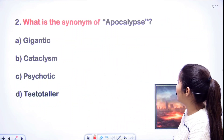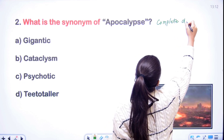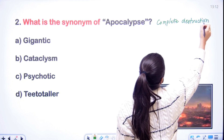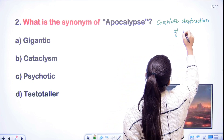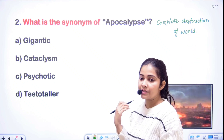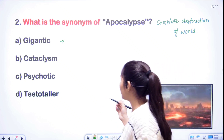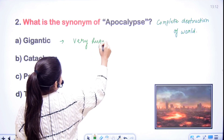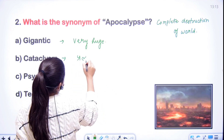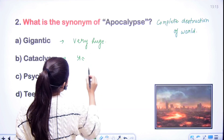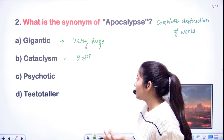What is the synonym of 'apocalypse'? Apocalypse होता है complete destruction of the world — यानी दुनिया का अंत हो जाना, complete destruction. First option है 'gigantic'. Gigantic का meaning होता है very huge — बहुत विशाल. Next word है 'cataclysm'. इसका मतलब होता है प्रलय — मतलब कोई बड़ी आपदा आ जाना, यह भी destruction ही हो गया — जिससे अगर प्रलय आ जाए तो नाश हो जाएगा.